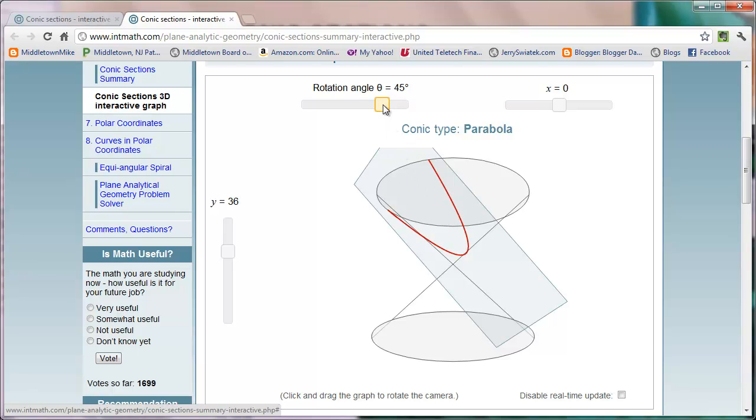And finally, as the plane tilts a little further, it intersects both the upper and lower cone, and we form this shape called a hyperbola. So these shapes are formed, again, by the intersection of a cone and a plane, and that's where the term conic comes from.